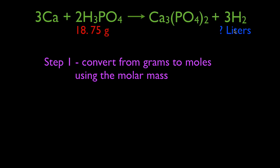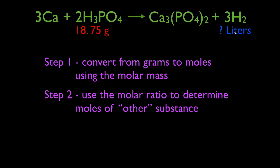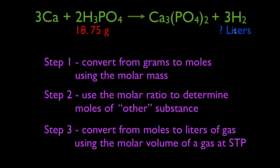This assumes we already have a balanced chemical equation. So step one is to convert from grams to moles using the molar mass. Then for step two, we're going to use the molar ratio to determine how many moles of the other substance we're going to produce.